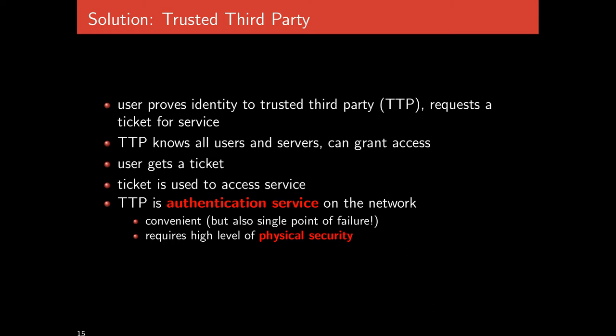The solution involves a trusted third party (TTP). Every user proves their identity to the TTP and requests a ticket for service. The TTP knows all the users and the servers — it's the center hub in a hub-and-spoke design. The TTP acts as an authentication service, providing the service of authentication so that the printer doesn't have to.